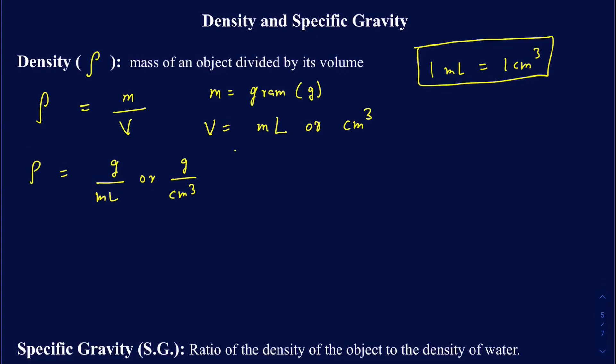However, in a physics course the units are slightly different. Mass is measured in kilograms, because kilogram is the SI unit, and volume is measured in meters cubed. So in physics, density is in kilograms per meters cubed. For our purposes here, we'll focus on grams per milliliter or grams per centimeters cubed.